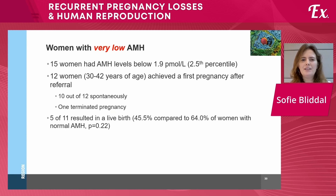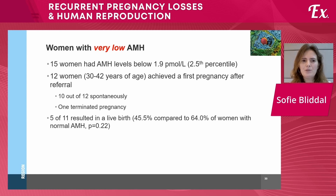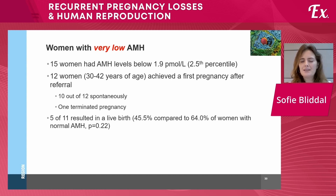Zooming in on women with very low AMH below 1.9 picomoles per liter — corresponding to the 2.5th percentile in our cohort — we had 15 women. Twelve achieved a first pregnancy after referral, ten of those spontaneously. One chose to terminate. Of the 11 remaining pregnancies, five had a live birth, giving a 45.5% live birth rate compared to an overall rate of 64% in women with normal AMH. Though not significant, there may be a slightly increased risk for another pregnancy loss with very low AMH. Interestingly, even those with almost unmeasurable AMH levels were able to achieve pregnancy, most of them spontaneously.